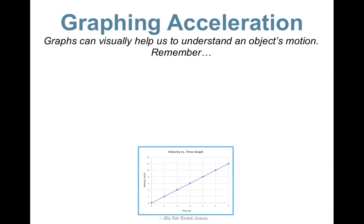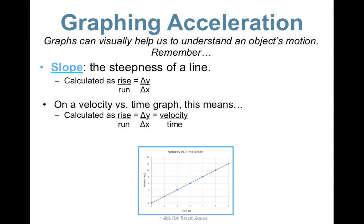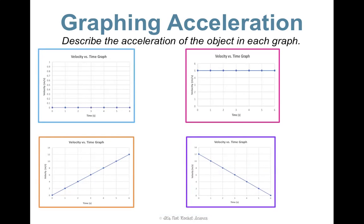Last thing, and we did this with describing motion, is graphing. Graphing acceleration is a way of visually helping us understand an object's motion. So another refresher, remember slope is the steepness of a line, calculated as your change in y over your change in x, rise over run. Now if you notice on a graph like this one, this is a velocity versus time graph. So y divided by x would be velocity divided by time, which we just learned is equal to acceleration. So on a velocity versus time graph, your slope is actually the acceleration of the object. So let's put this into practice.